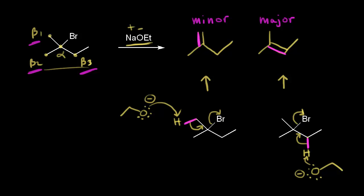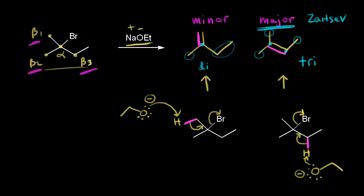The major product on the right is a more stable alkene — it's more substituted. Looking at the carbons of the double bond, we have one, two, three alkyl groups, making it a trisubstituted alkene. The minor product on the left has only two alkyl groups, making it a disubstituted alkene. The more substituted alkene is more stable. We call this the Zaitsev product — the more substituted, more stable, major product. That's why this reaction is regioselective when using sodium ethoxide.